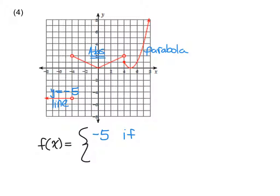Now we state the conditions. It has an arrow so it goes all the way to negative infinity, but it terminates at negative four — and it never gets to negative four. So what can I say in the form of an inequality? x is less than negative 4. Now the next piece is an absolute value function. The slope is up one over two, so the slope is one half.